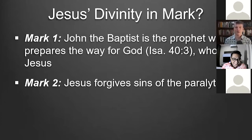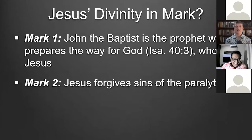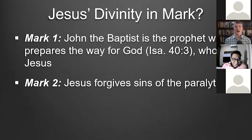In Mark chapter 1, John the Baptist is the prophet predicted by Isaiah, who prepares the way for God — who ends up being Jesus. Mark starts off his gospel by saying, 'As Isaiah the prophet said, the voice of one crying in the wilderness, prepare the way of the Lord, make straight his paths.' John the Baptist prepares the way for Jesus, so from the very beginning of chapter 1, Mark is suggesting that Jesus is God. Then in chapter 2, Jesus forgives the sins of a paralytic and heals him, and the Jewish leaders say, 'That's blasphemy, because only God can forgive sins.'